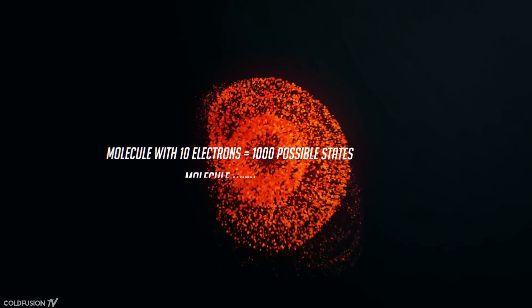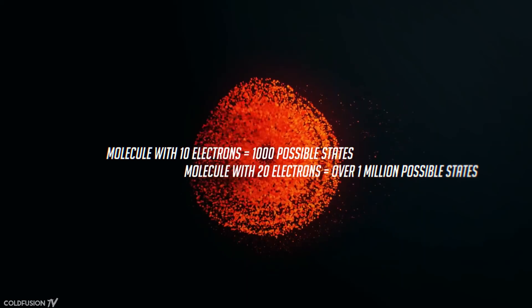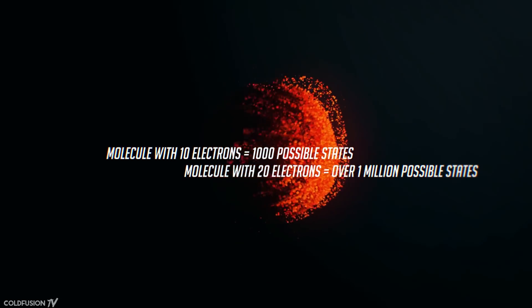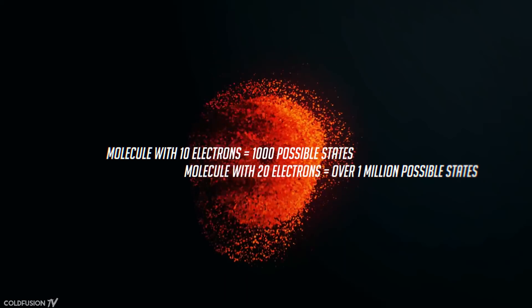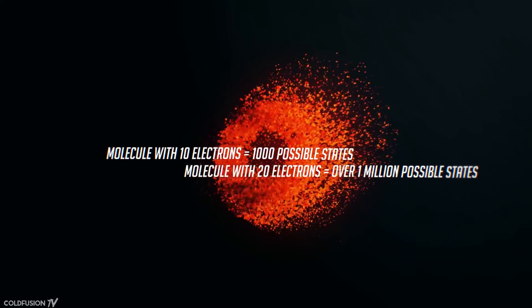For 10 electrons, we would need to track about a thousand possible states, but for a molecule with just 20 electrons, we'd have to keep track over a million different probability states. If we want to model a real physical system with millions of electrons, things quickly get out of hand.